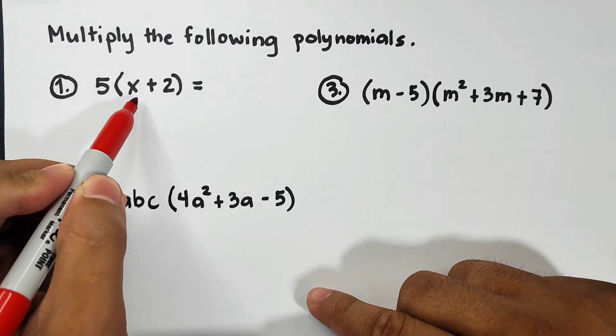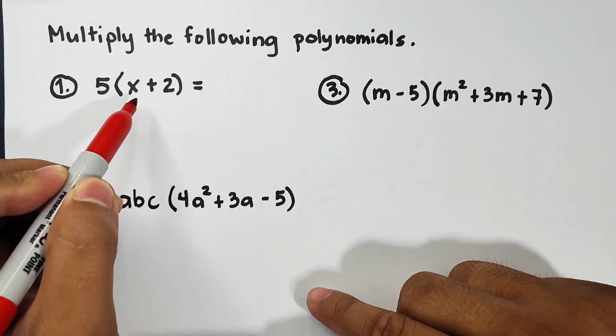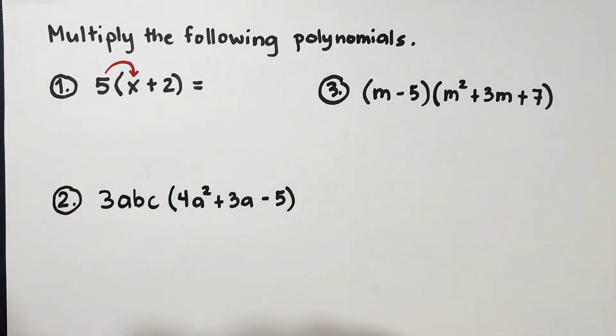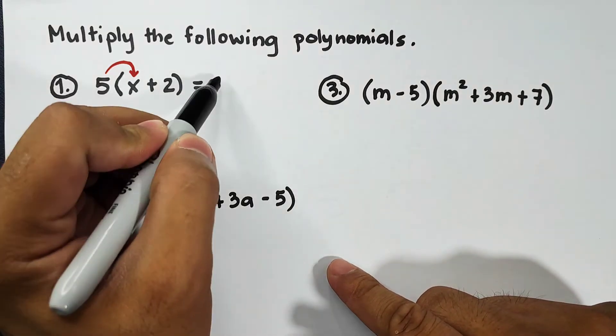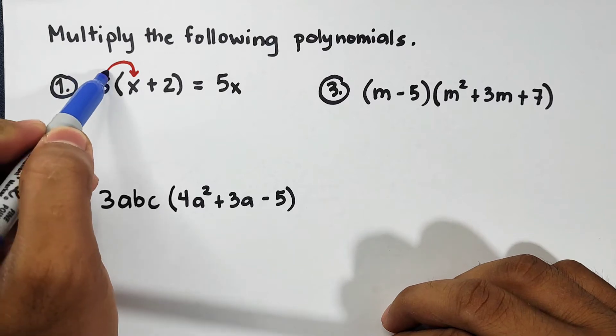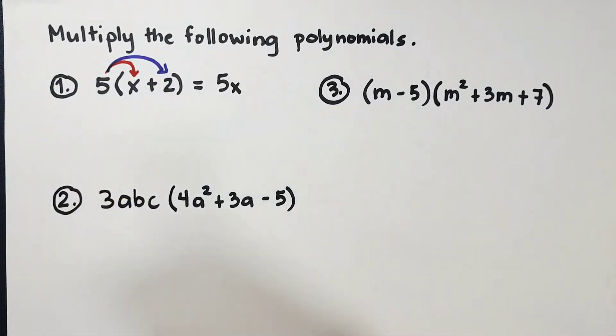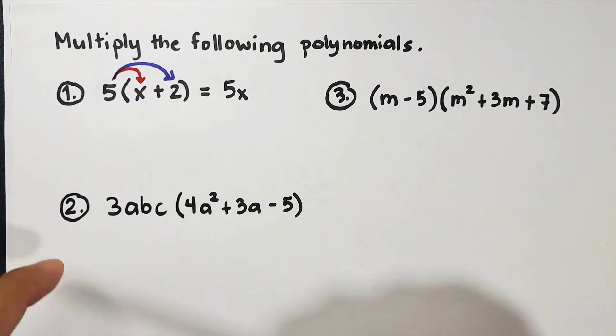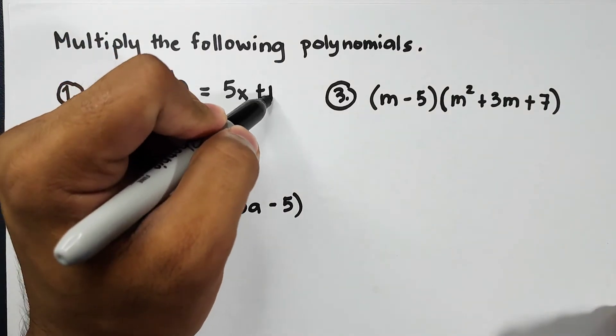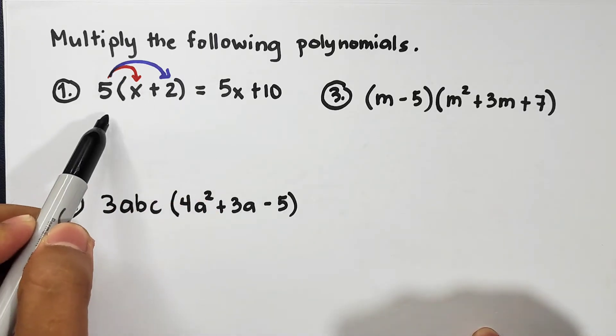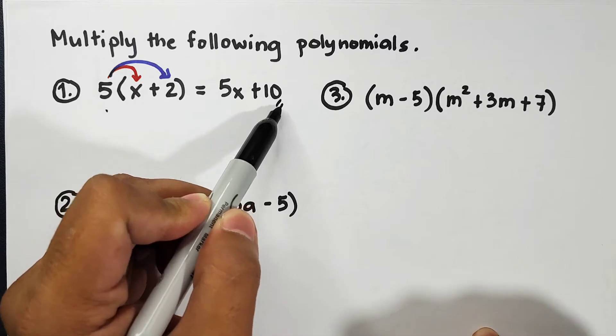First, 5 times x - so we multiply 5 and x and that is 5x. Now for the second expression, 5 times 2 - as you can see the product is simply positive 10. That is plus 10.